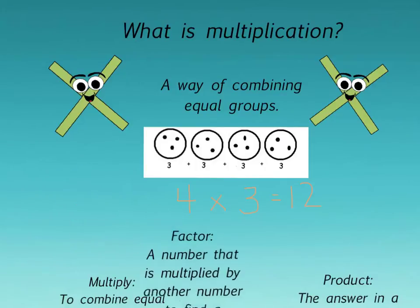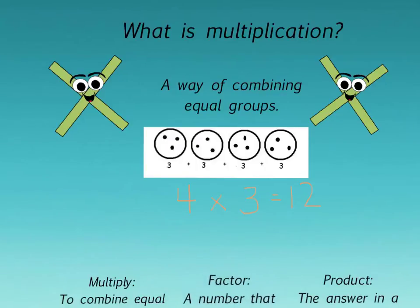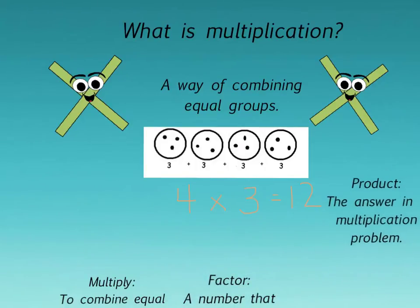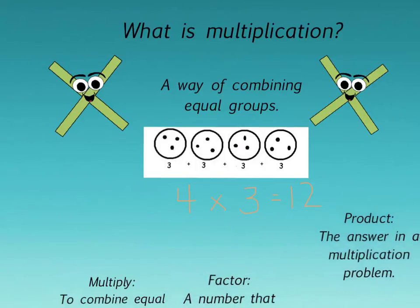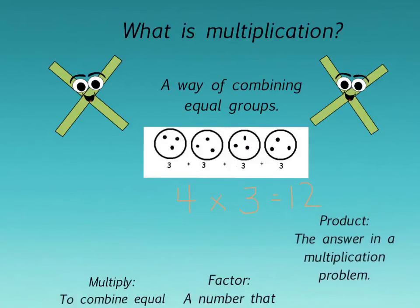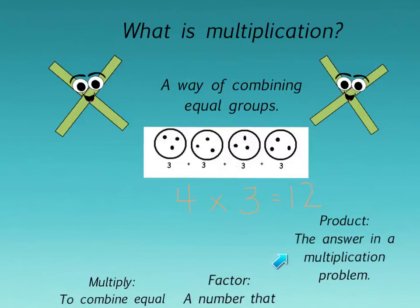And then we're going to look at the final word: product. Product is the answer in a multiplication problem. So we have our two factors that are multiplied together and they give us the product. Remember, the product is the answer in a multiplication problem.